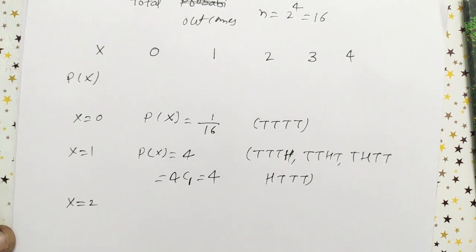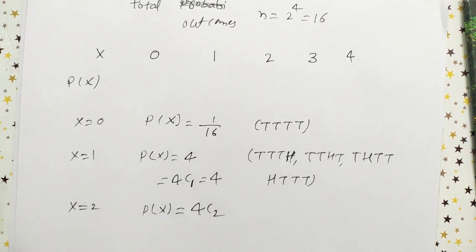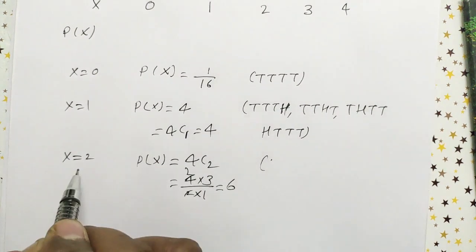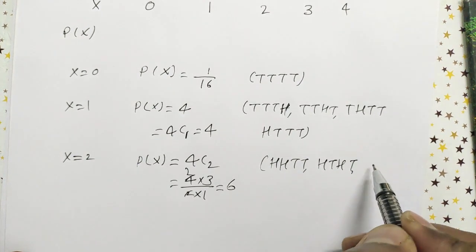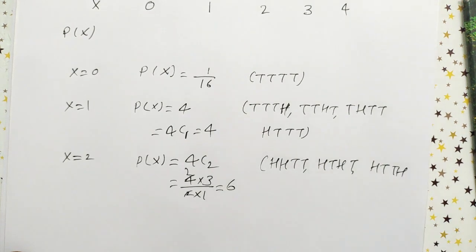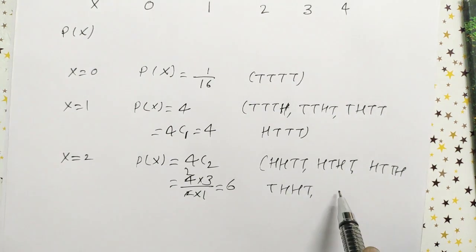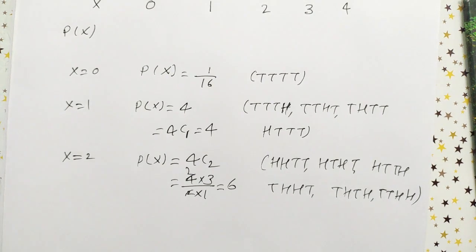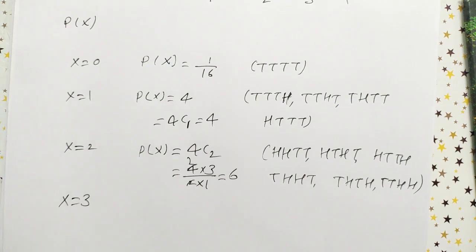When X equals 2, two heads appear. P(X=2) = 4C2 = (4×3)/(2×1) = 6. The outcomes are: head head tail tail, head tail head tail, head tail tail head, tail head head tail, tail head tail head, tail tail head head — six outcomes total. So P(X=2) = 6/16.